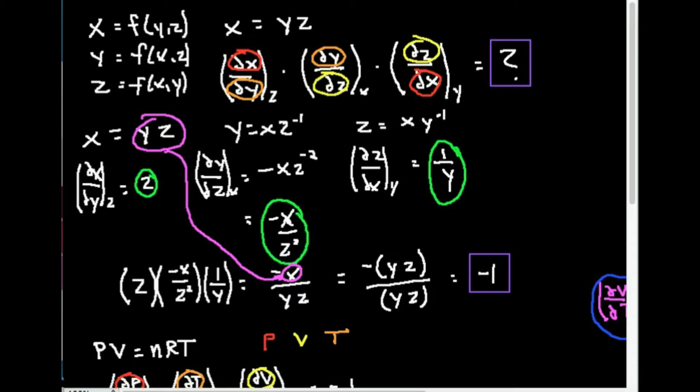And that is the multivariable calculus chain rule. Suppose I have some function that has three different variables. However, I can write each variable x, y, or z in terms of both of the others.